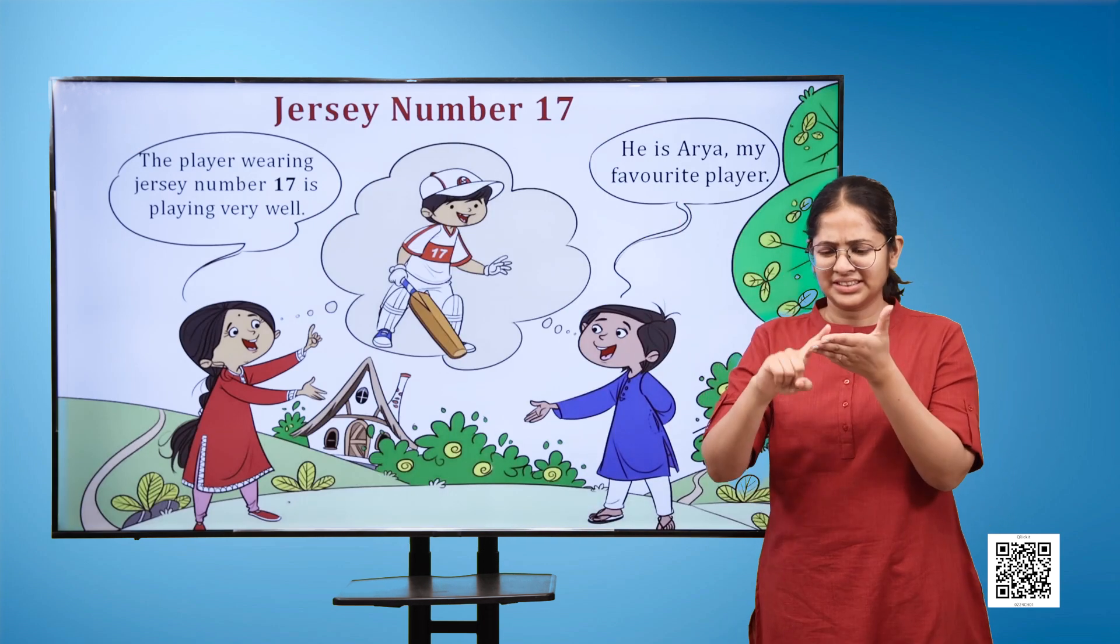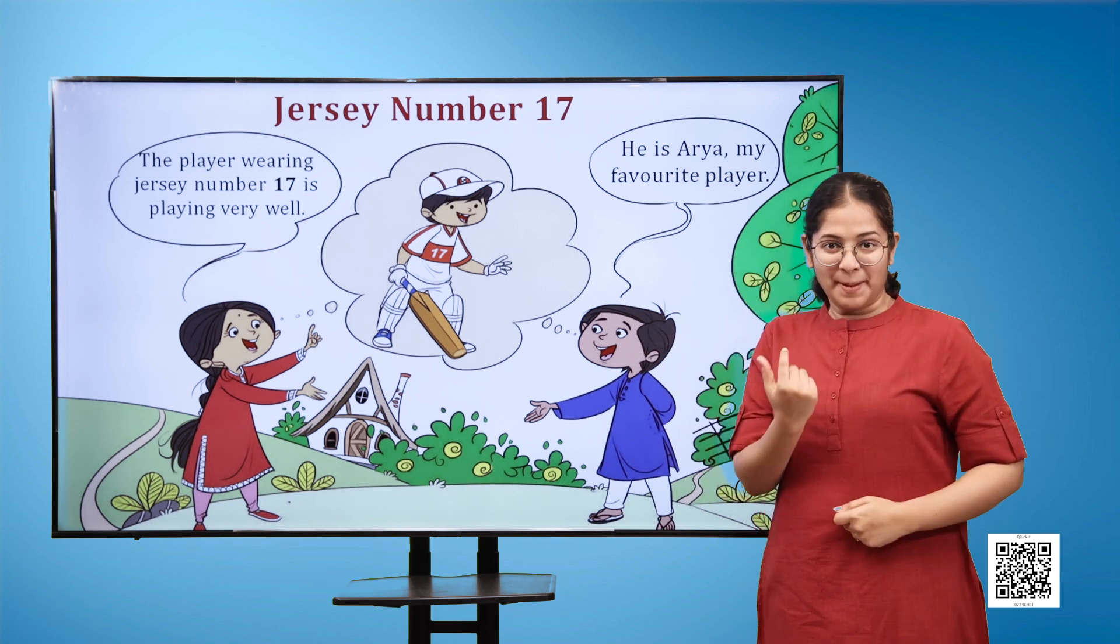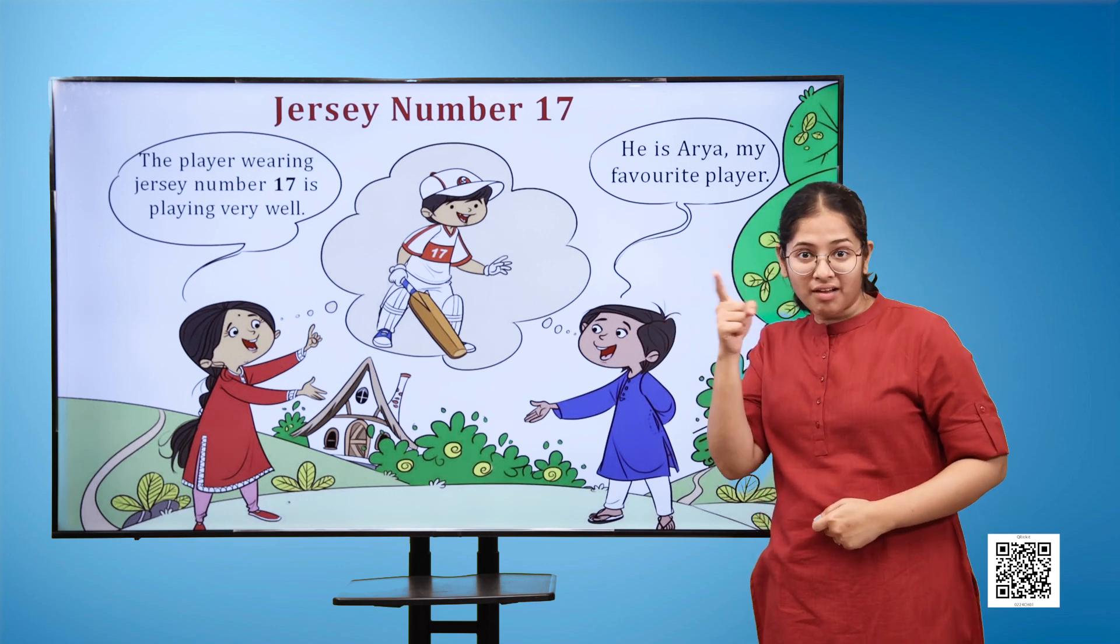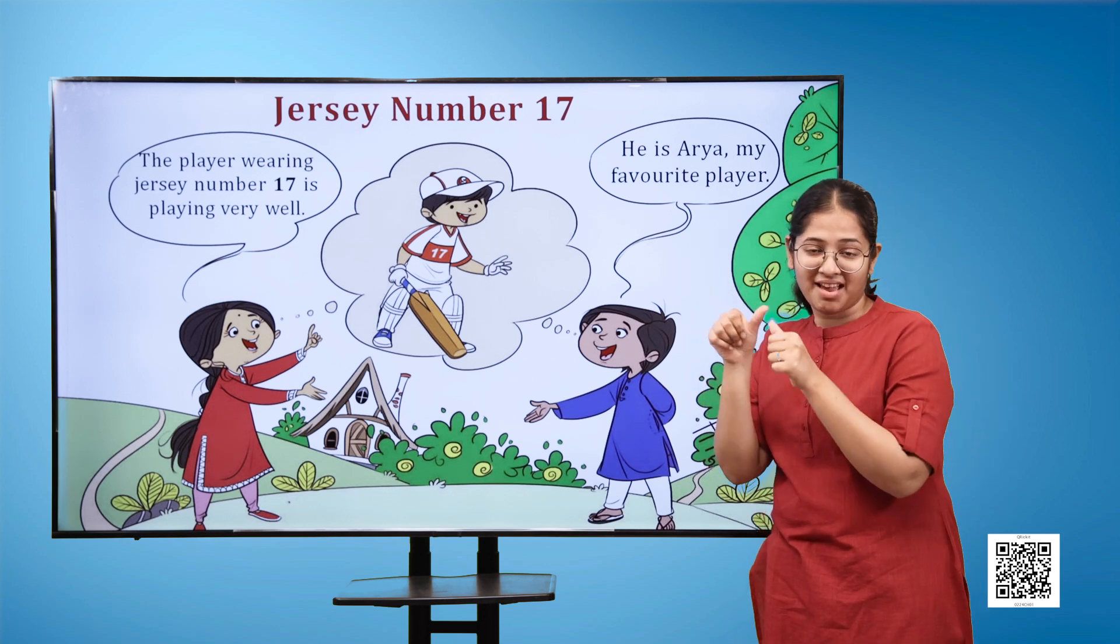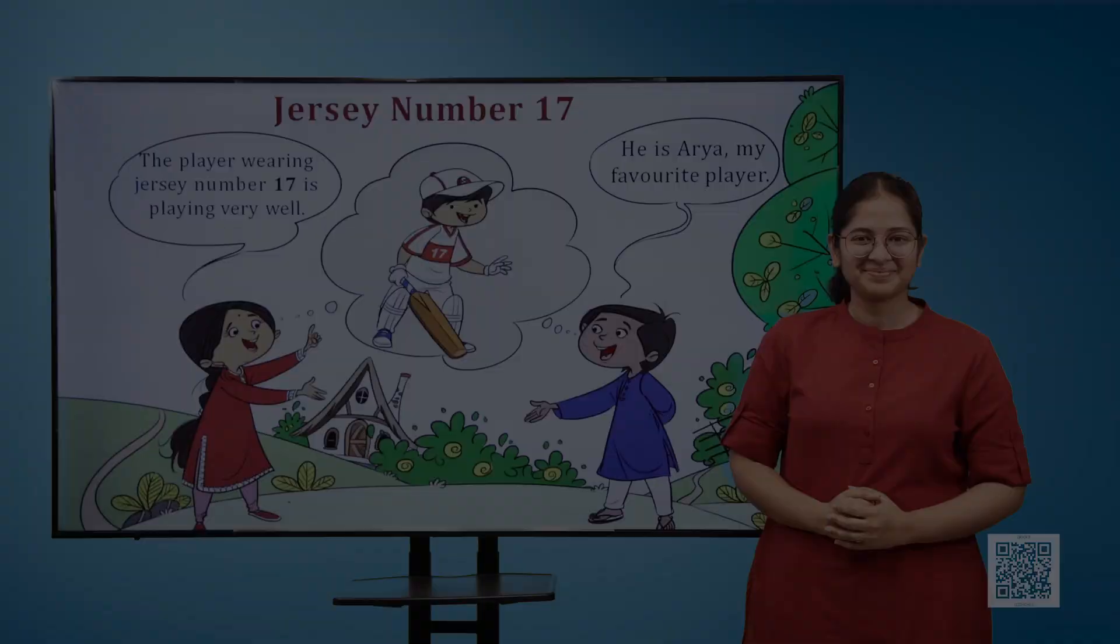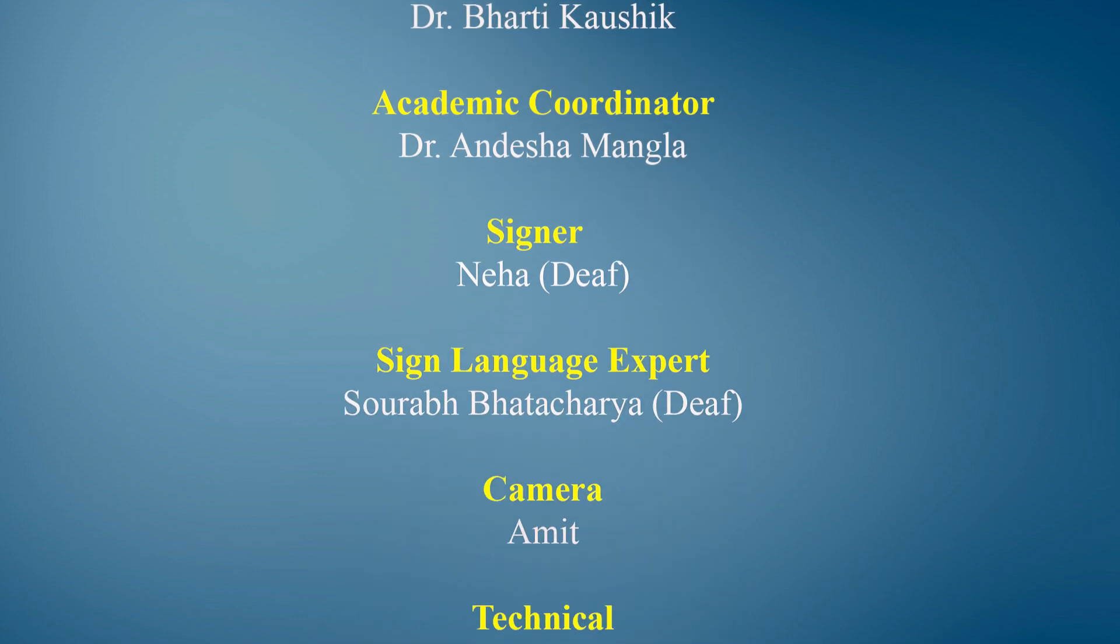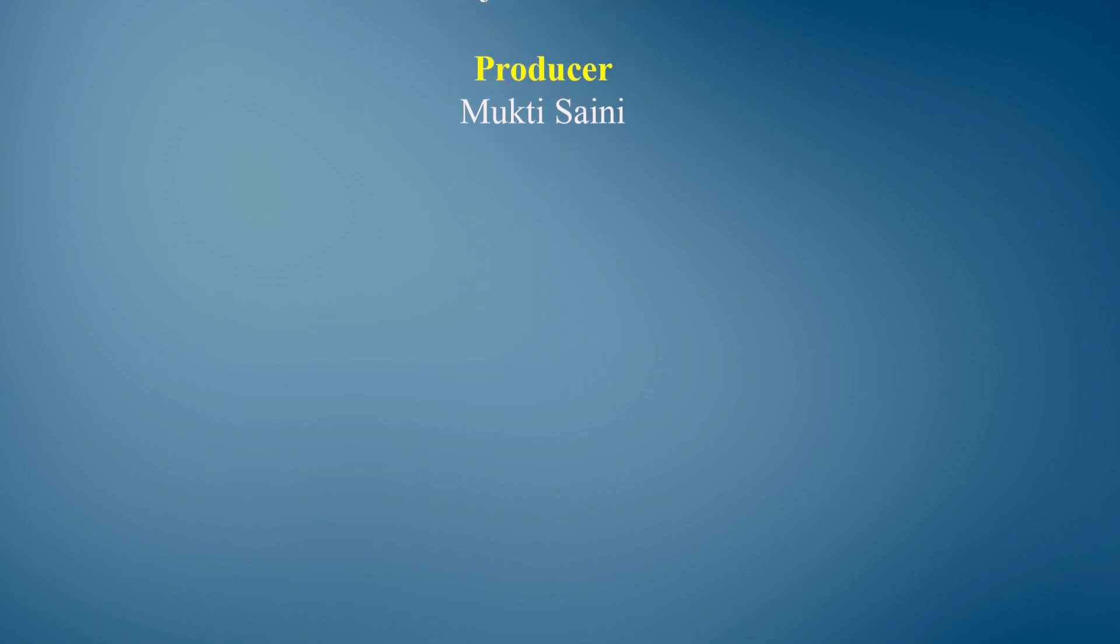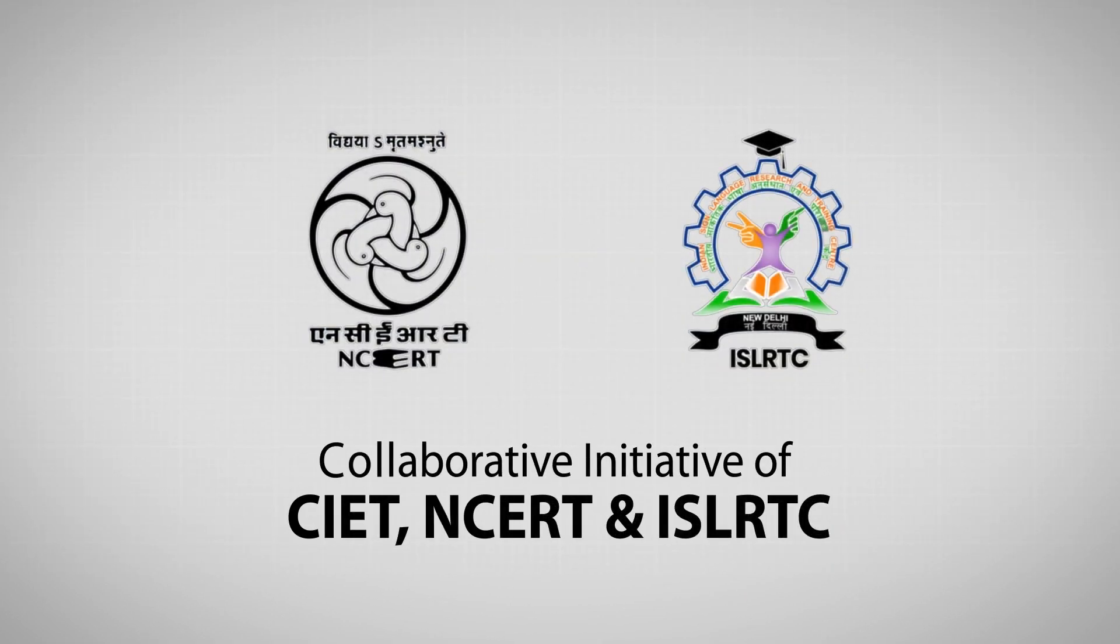Jersey number 17. Now we have an image here. The image has a boy and a girl, and they are imagining a cricket player. The player is wearing jersey number 17. The girl says he is Arya, my favorite player. So he is Arya.